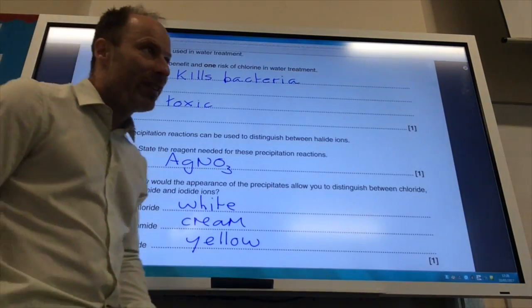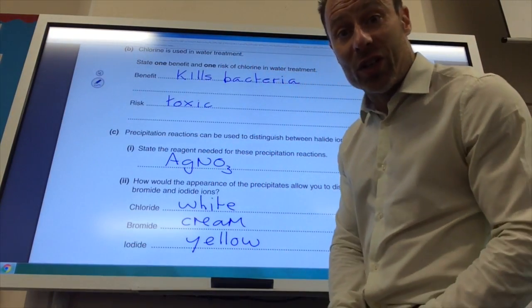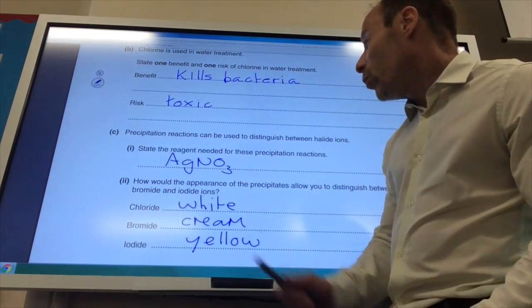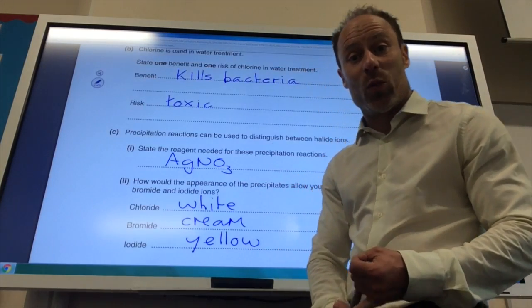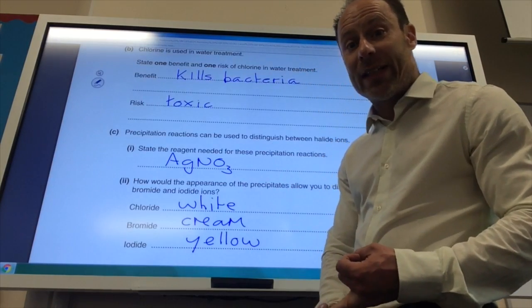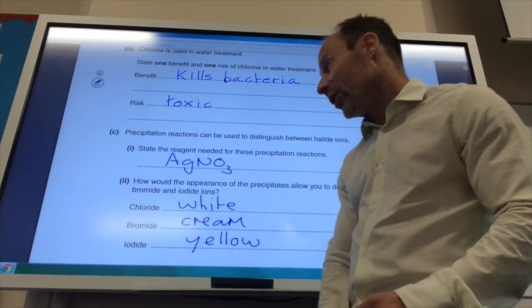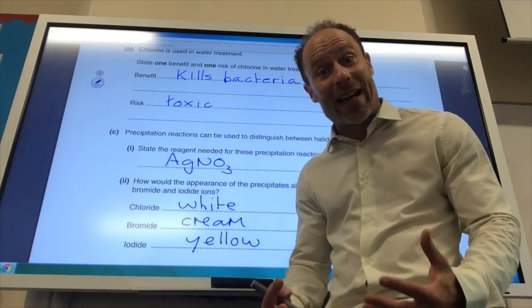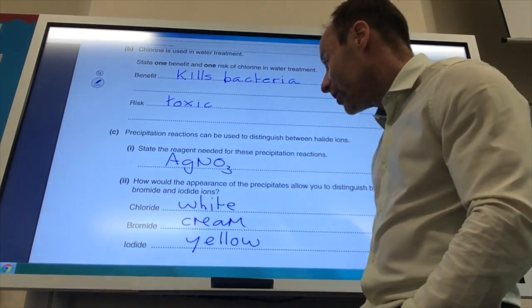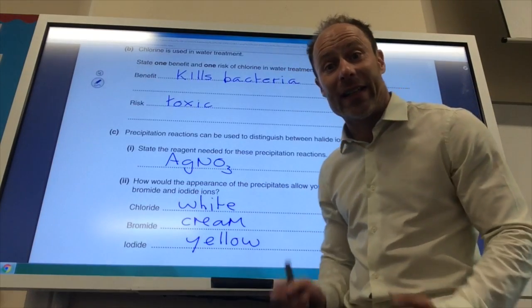If I want to do a precipitation reaction to identify chloride, bromide and iodide ions, I would use silver nitrate solution. And what will be the color of those precipitates? Remember chloride is white, silver bromide is cream, and silver iodide is yellow. Key mistake is the silver precipitate. So silver halide precipitates which give you those colors. Silver chloride is white, silver bromide is cream, silver iodide is yellow.